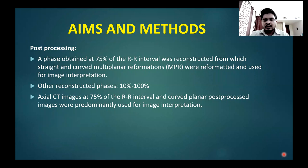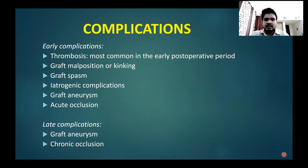Other phases were also reconstructed from 10–100%. Axial CT images at 75% of the RR interval and curved planar post-processed images were predominantly used for image interpretation.